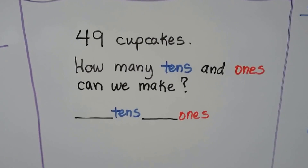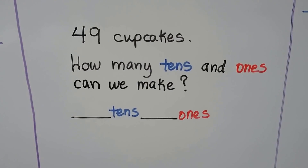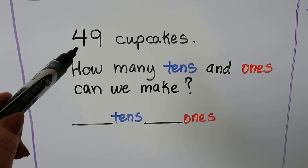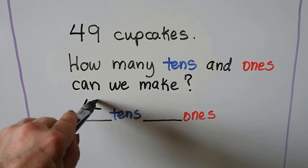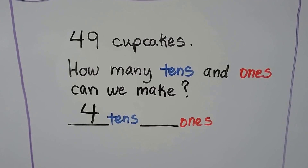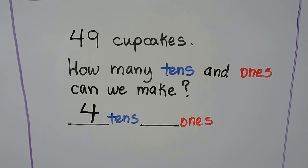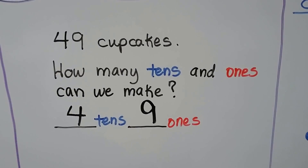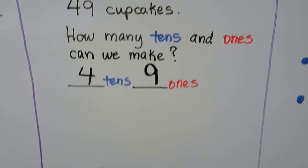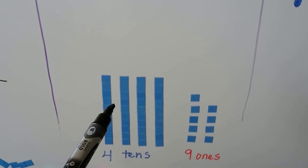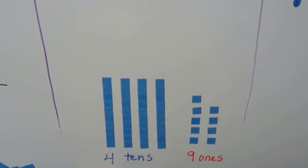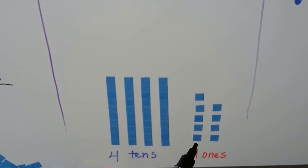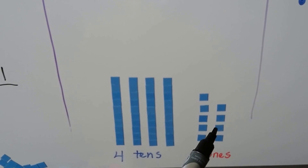49 cupcakes. How many tens and ones can we make? What number is in the tens place? If you said four, you're right. And what number is in the ones place? A nine. We have four tens and nine ones — one, two, three, four tens, and nine ones: one, two, three, four, five, six, seven, eight, nine.